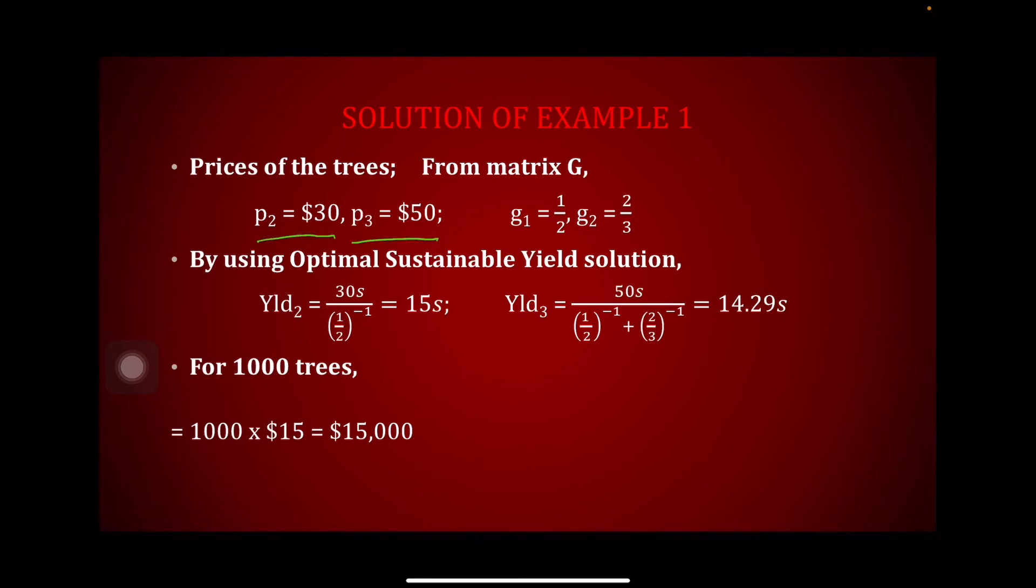Here is the solution for example 1. Prices of the trees: From matrix G, p2 is $30, p3 is $50; g1 = 1/2, g2 = 2/3. By using Optimal Sustainable Yield solution, Yield2 = s/(1/g1) = 15s; Yield3 = s/(1/g1 + 1/g2) = 14.29s. For 1000 trees, equals 1000 x $15 = $15,000. What we can conclude that yield 2 is the largest of these two quantities. The second class should be completely harvested to obtain optimal sustainable yield. The optimal yield for 1,000 trees is $15,000.